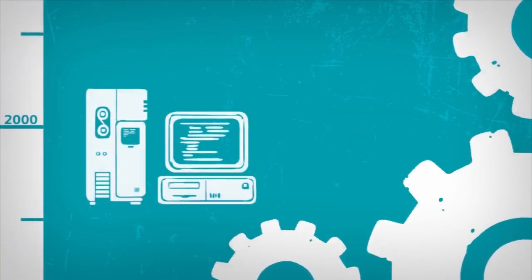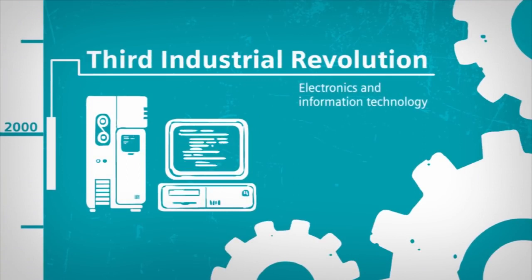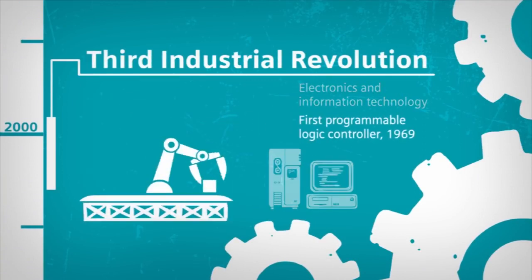In the mid-1970s, electronics and IT began to expand rapidly into industry. Siemens developed the first SIMATIC. Production became increasingly based on computer-assisted controls.